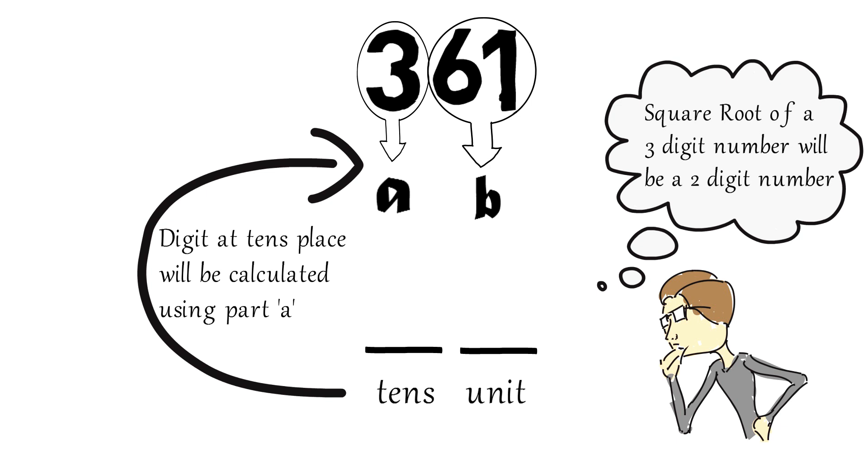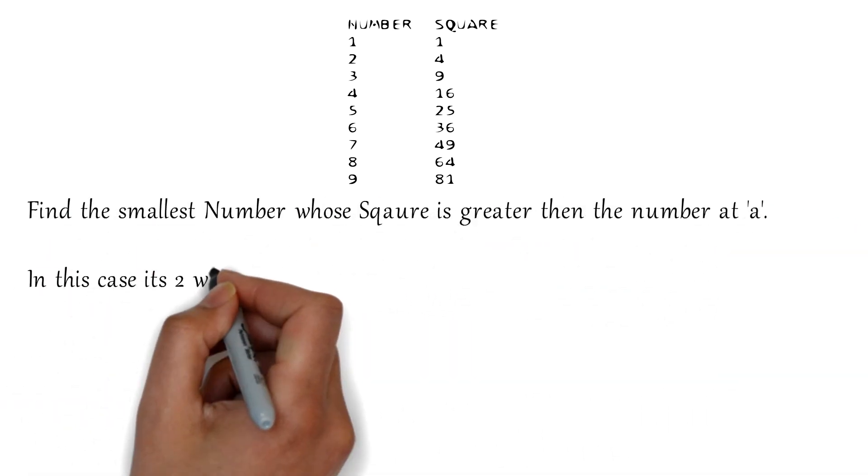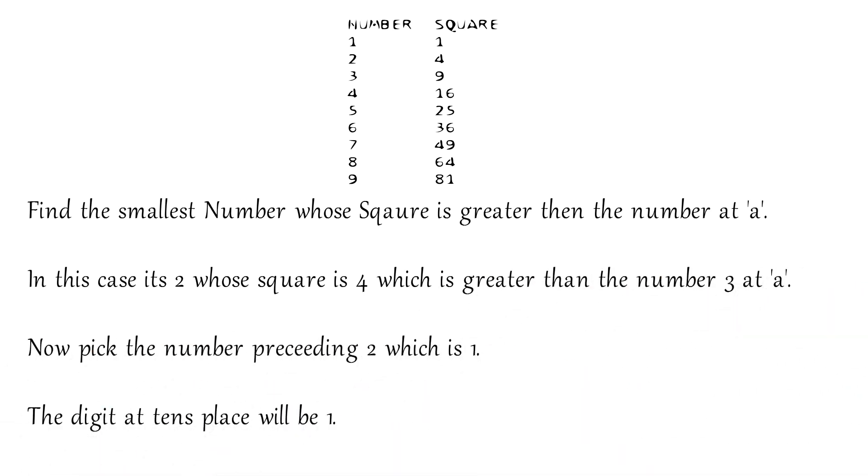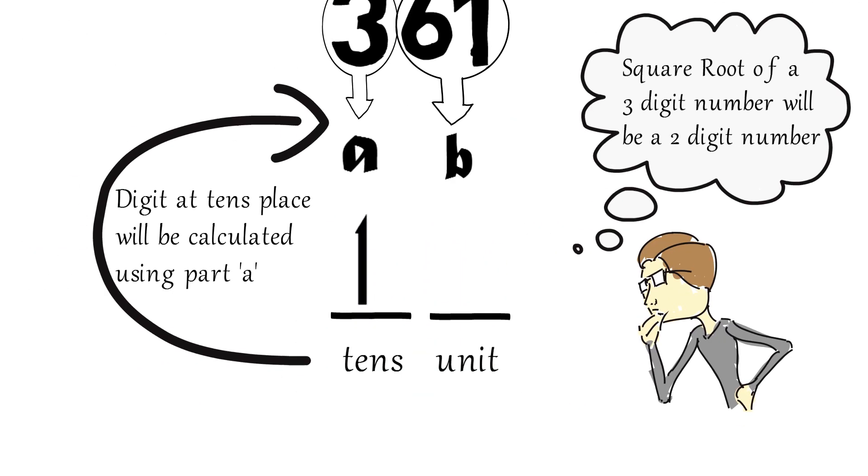Now the smallest digit whose square exceeds the number a is 2, so the number preceding 2 will be 1. The number at tens place will be 1.